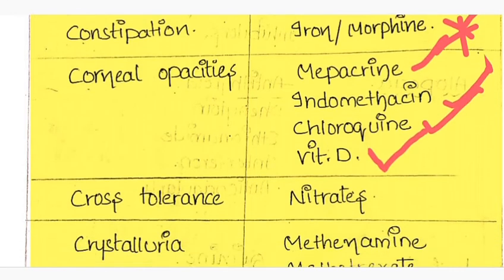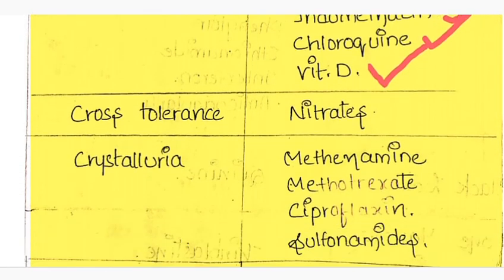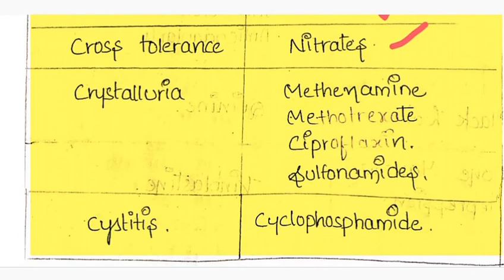Cross tolerance is caused by nitrates. And crystalluria is caused by methenamine, methotrexate, ciprofloxacin, and sulfonamides.